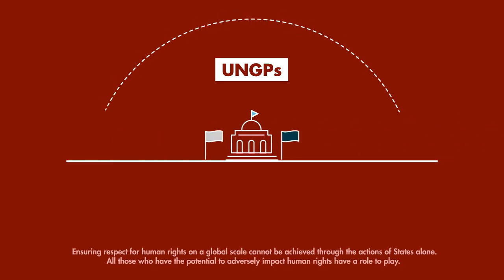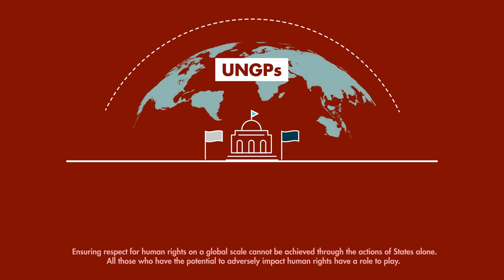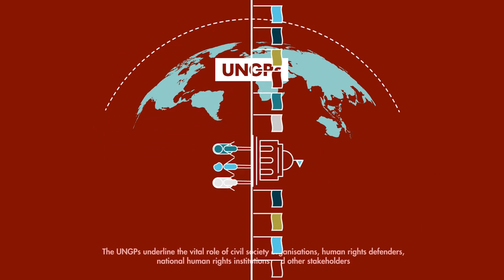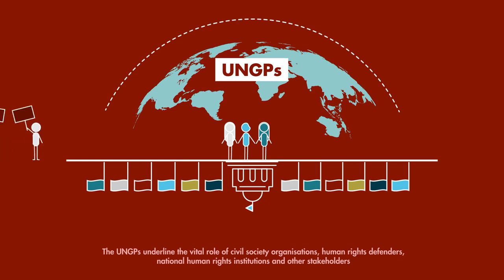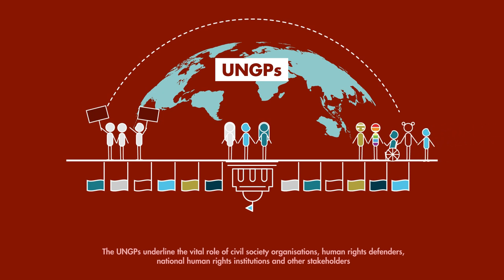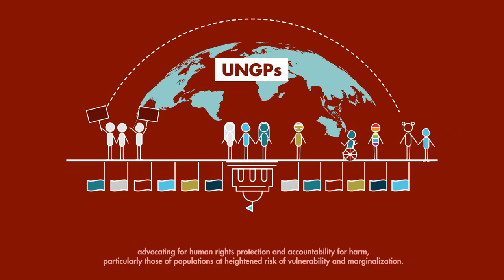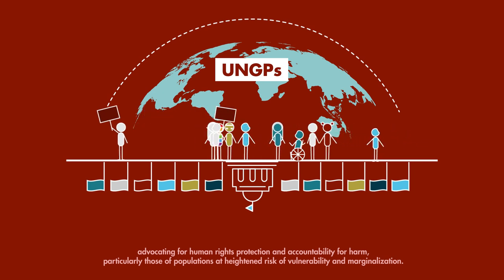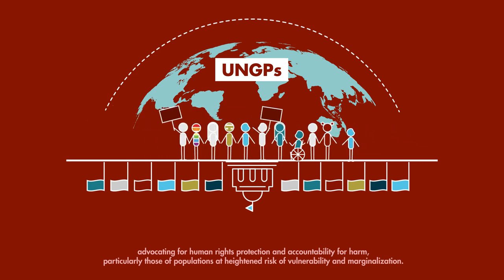Ensuring respect for human rights on a global scale cannot be achieved through the actions of states alone. All those who have the potential to adversely impact human rights have a role to play. The UNGPs underline the vital role of civil society organizations, human rights defenders, national human rights institutions, and other stakeholders advocating for human rights protection and accountability for harm, particularly for populations at heightened risk of vulnerability and marginalization.